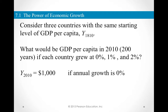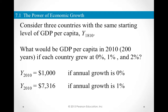Of course, if the economy doesn't grow at all, then whatever was the level of GDP per capita in 1810 is going to be the same as in 2010. Now let's look at what happens if the economy grew at 1% over the period of 200 years. We can see that $1,000 of GDP per capita in 1810 becomes $7,316 at a 1% growth rate over 200 years.